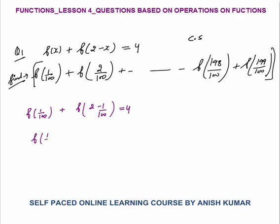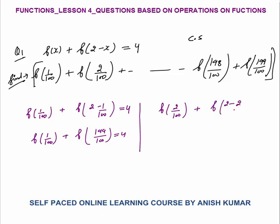So f(1/100) + f(199/100) = 4. Now if you put x = 2/100, you get f(2/100) + f(2 − 2/100), which is f(198/100). So the second and second-last terms also give a sum of 4.